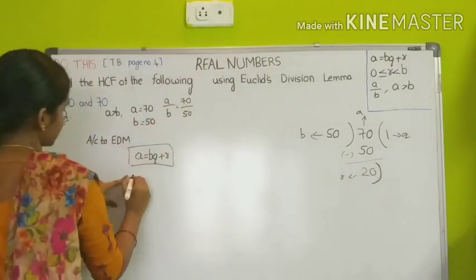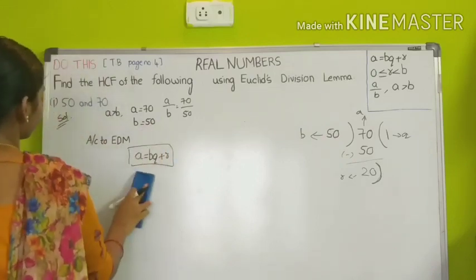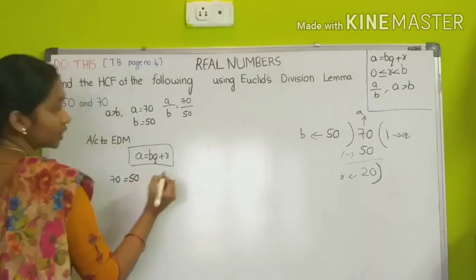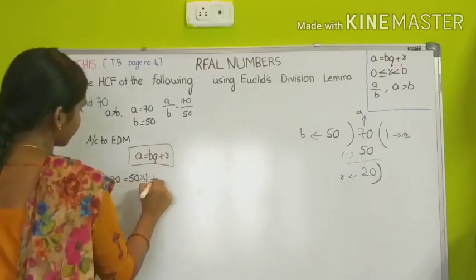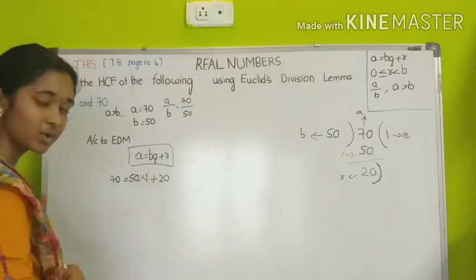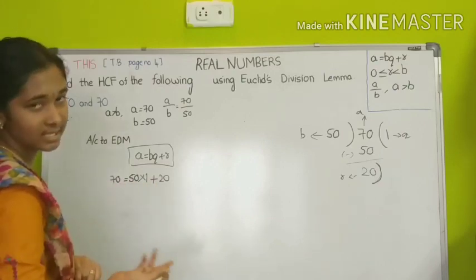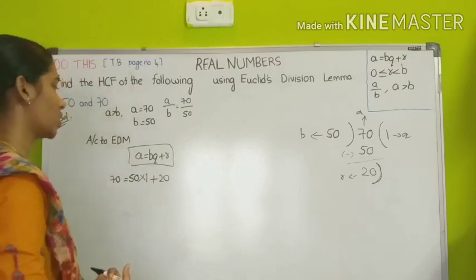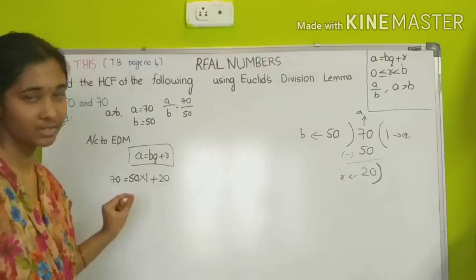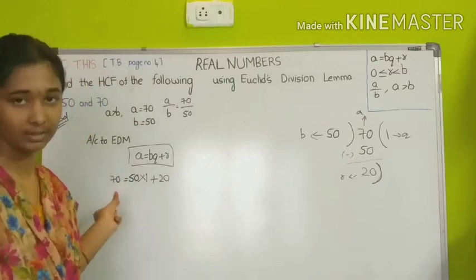We substitute: A is 70, B is 50. So 70 equals 50 into 1 plus 20. The condition is LHS should equal RHS. LHS is 70; 50 into 1 is 50, and 50 plus 20 is 70. So 70 equals 70 — LHS equals RHS. Since the remainder didn't become 0, we continue the process. When the remainder becomes 0, the value of B becomes the HCF of the two numbers. That's the key condition to find the HCF.